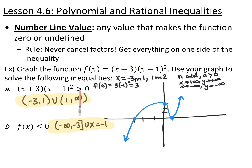If we want where this function is greater than 0, we want where it's strictly above the x-axis — not including negative 3, all the way to 1 not included, and then 1 up to positive infinity. If we want where f of x is less than or equal to 0, we want where it's below or equal to the x-axis, so everything from negative infinity up to negative 3 included. But because we also want where it equals 0, we include x equals negative 1.